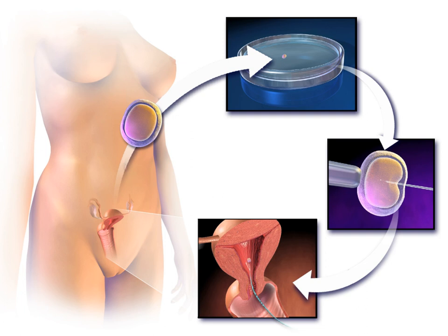Assisted Reproductive Technology are medical procedures used primarily to address infertility. It includes procedures such as in vitro fertilization, intracytoplasmic sperm injection, cryopreservation of gametes or embryos, and may involve the use of fertility medication. When used to address infertility, it may also be referred to as fertility treatment.